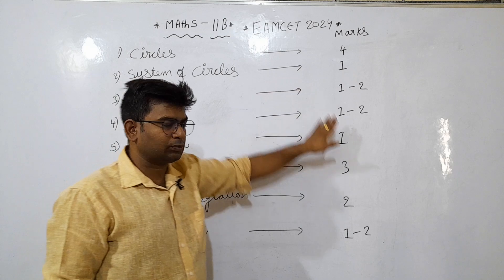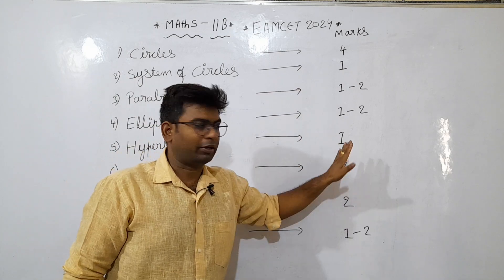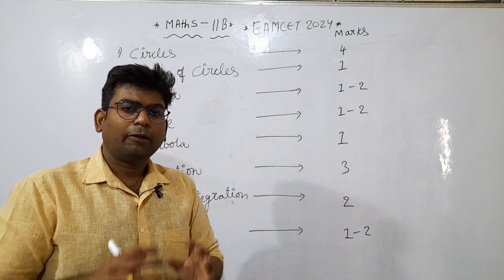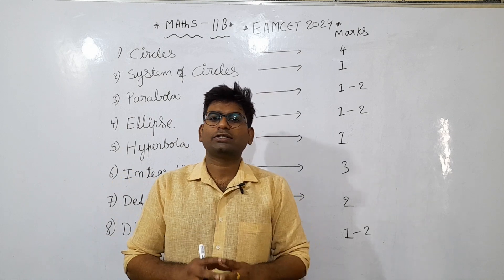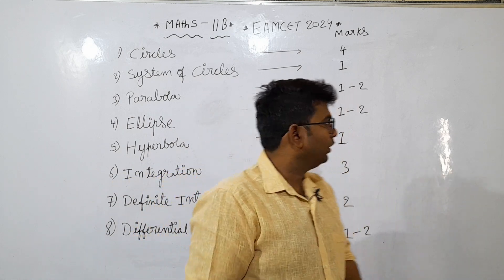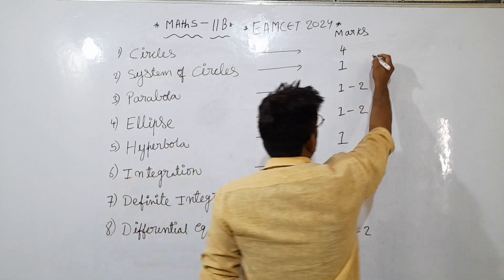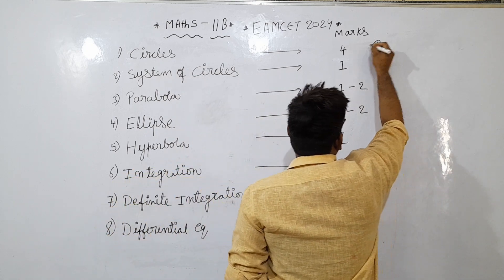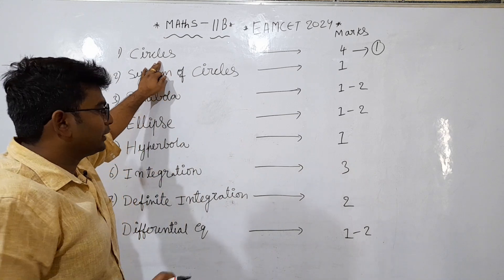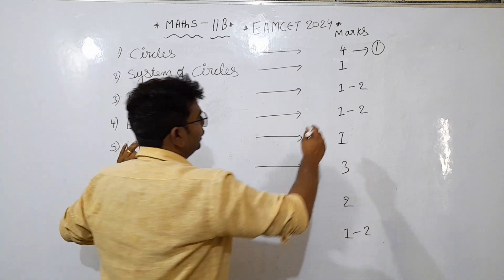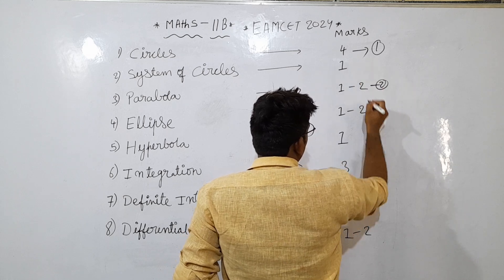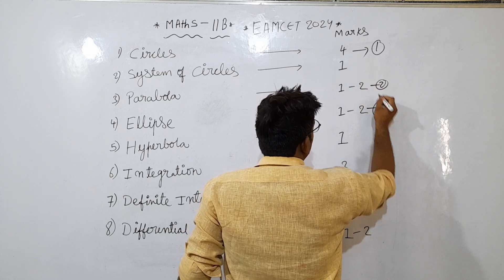From each chapter, how many questions come — you need to know this. If you do smart work in your preparations, you will do well. So the first easy, high weightage chapter is circles — do circles first. After that, parabola is second. Then ellipse is third.